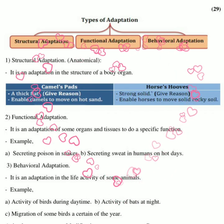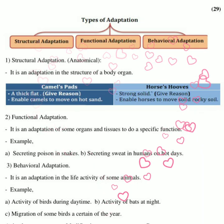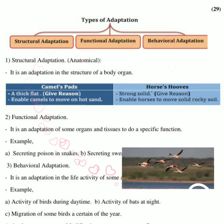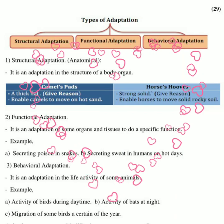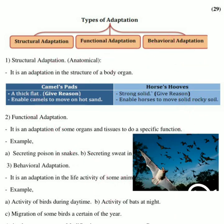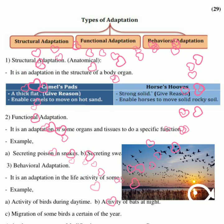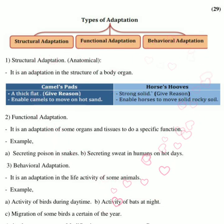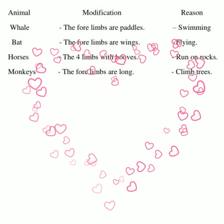The last type is behavioral adaptation — it is the activity of the living organism, such as the activity of birds during the day and the activity of bats at night. Also, the migration of some birds is an example of behavioral adaptation. Now let's study some examples of adaptation related to motion, food, and environment.